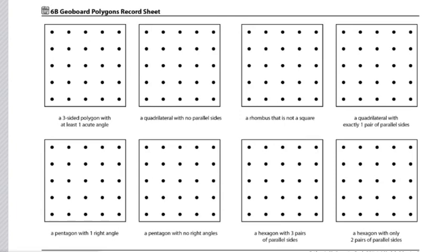These are directions for Workplace 6B GeoBoard polygons. Each student works alone during this workplace, and they will need one 6B GeoBoard polygon record sheet, GeoBoard and bands, as well as a ruler.